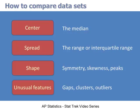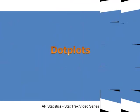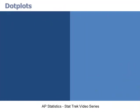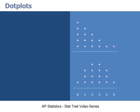The bulk of this lesson shows how to interpret different kinds of charts in terms of these four features. Let's begin with dot plots. When dot plots are used to compare data sets, they are positioned one above the other using the same scale of measurement.